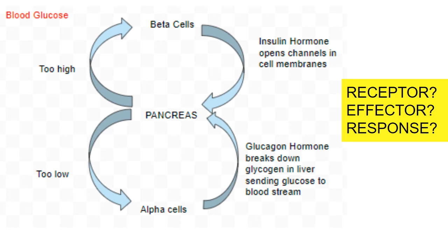Another very common example is glucose levels. Your pancreas monitors your blood sugar levels, and if it gets too high, beta cells in your pancreas release the insulin hormone, which helps open channels in cell membranes to bring sugar into the cells. If your blood sugar gets too low, your pancreas signals alpha cells, which release glucagon hormone, which then goes to the liver and helps break down stored glycogen, sending glucose back into the bloodstream. These negative feedback mechanisms have to work together at a huge level throughout the body to keep things within a range.